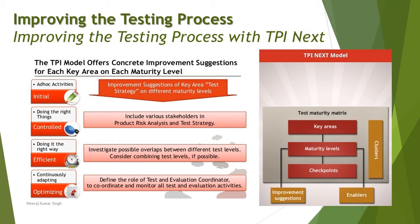Last but not least, the Optimizing level is about continuously adapting to changes and requirements from the process improvement side. At this point, a dedicated role – the Test and Evaluation Coordinator – is defined to take care of process organization, improvisation, and to coordinate and monitor all test and evaluation activities. From time to time, after each project, the process is further optimized to meet the desired maturity level.